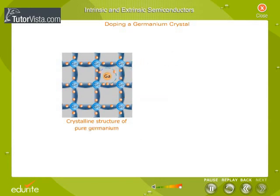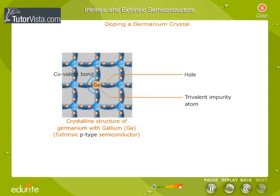When a trivalent impurity like boron, gallium, or indium is added to a pure germanium crystal, only three covalent bonds are formed and there exists a vacancy in the fourth bond, creating a hole as shown in the figure. These types of semiconductors where positively charged holes are the current carriers are known as p-type semiconductors.